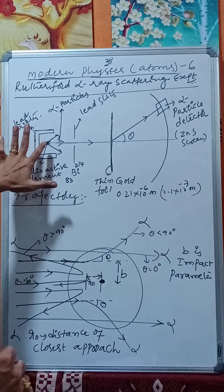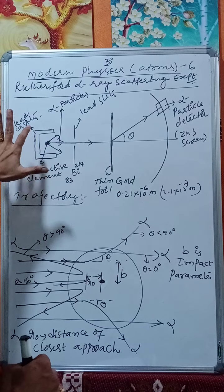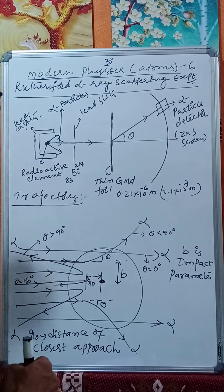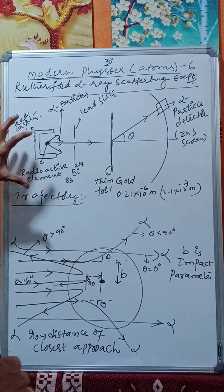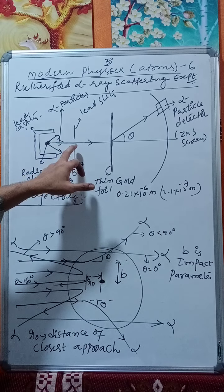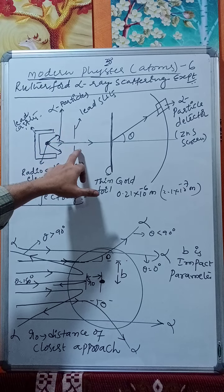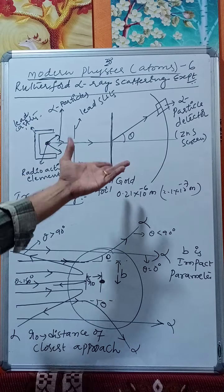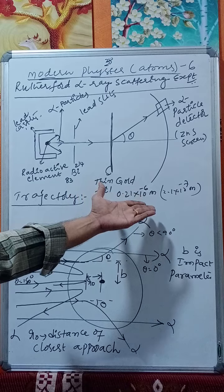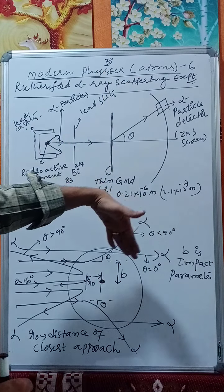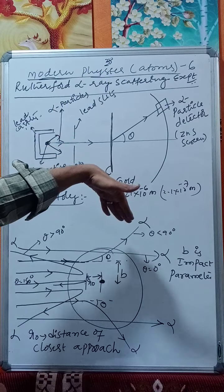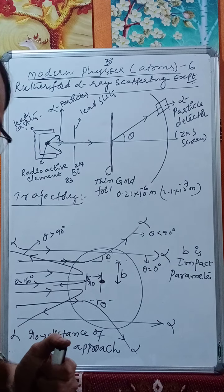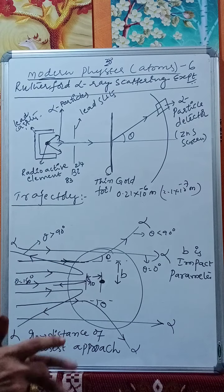To summarize the setup: a radioactive nucleus (bismuth) in a lead cavity emits alpha particles, which pass through lead slits and fall on a thin gold foil of thickness 0.21 micrometers. These are then collected by a zinc sulfide screen with an alpha particle detector that counts particles falling at different angles.